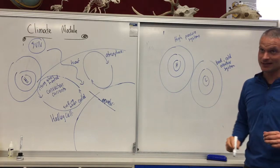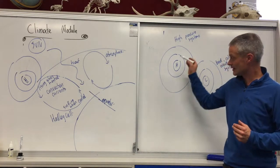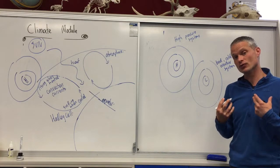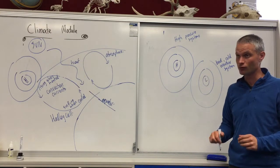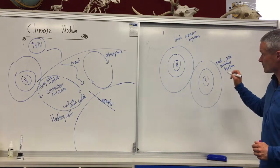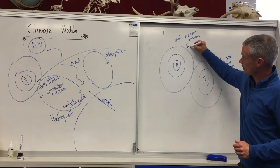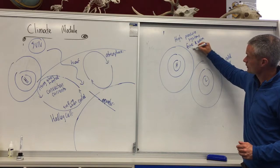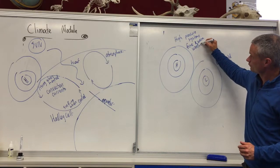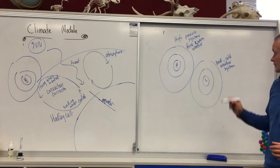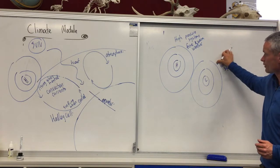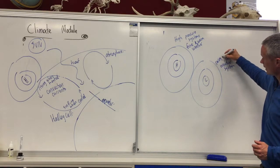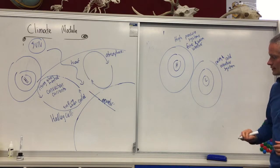Low pressure systems tend to produce more rain because as water cools down it's less able to hold moisture. So high pressure systems mean fine and warm weather, while low pressure systems mean rainy and cold weather.